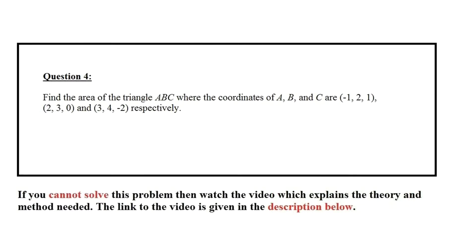Hi there, in this video I'm going to do a revision question on vectors. Let's take a look at question number 4: find the area of the triangle ABC where the coordinates of A, B and C are minus 1, 2, 1; 2, 3, 0; and 3, 4, minus 2 respectively. So let's see how this is done.